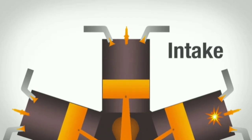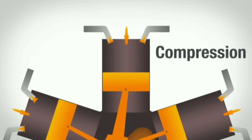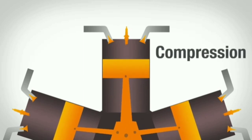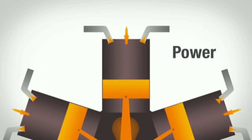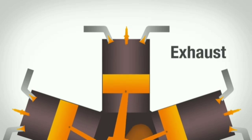During the intake stroke, the crankshaft pulls a piston down creating a vacuum, which draws a mixture of fuel and air through the intake valve. During the compression stroke, the crankshaft continues to spin, pushing the piston back and compressing the mixture. Before the piston hits the very top, the spark plug fires. During the power stroke, this ignition pushes the piston down causing the crank to rotate.